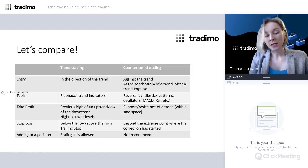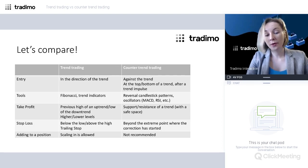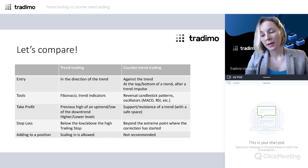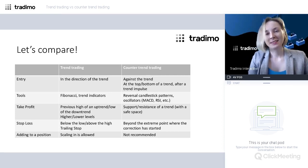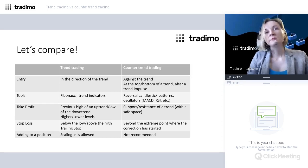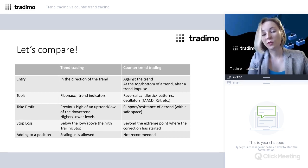We can compare trend trading and counter trend trading across several parameters. Regarding entry: in trend trading, entry is in the direction of the trend. In counter trend trading, we enter against the trend at the top or bottom of a trend, or after a strong impulse in the trend's direction. Often after the price rapidly goes up, a downside correction follows because market players close their bullish positions and readjust to re-enter at lower levels — so a pullback happens.